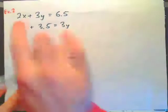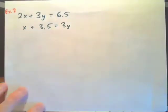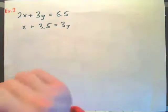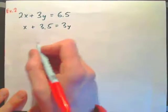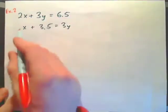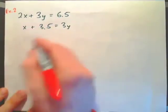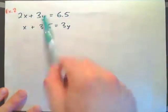Example 2: 2x plus 3y equals 6.5, and x plus 3.5 equals 3y. We need to solve by elimination, not substitution — even though substitution looks easy. We need both skills, and all this homework needs to be done by elimination as directed. If we add equations together right now, nothing will eliminate — we'd get 3x and terms that aren't like terms.